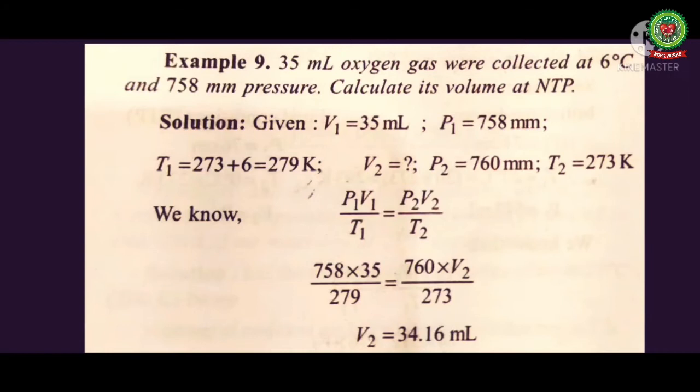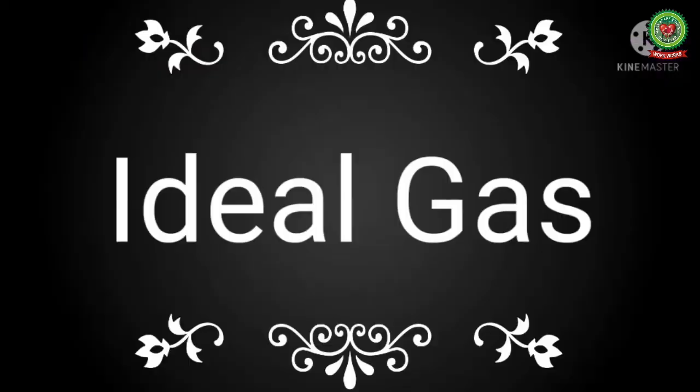Final conditions: as it is mentioned in the numerical NTP means normal temperature and pressure, so P2 is 760 mm, T2 is 273 Kelvin, and V2 we have to find out. Putting the value of P1, V1, T1, P2, and T2, we will get value of V2 is 34.16 ml.